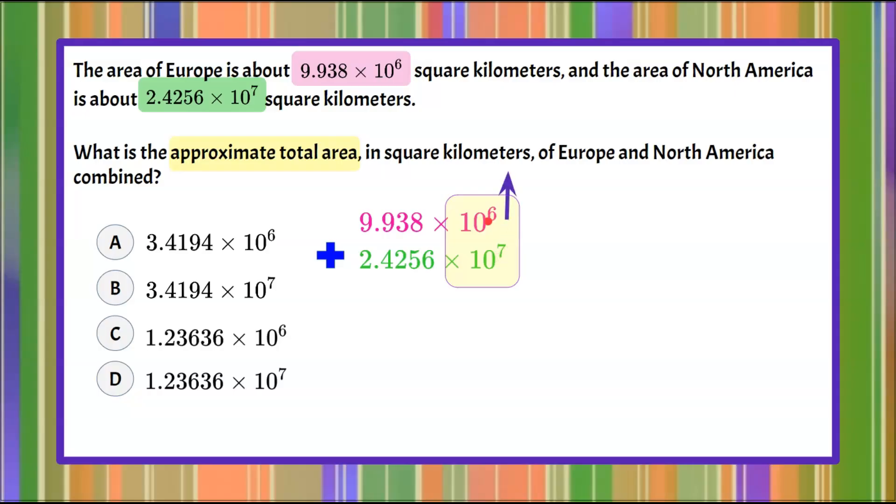I'm going to pick 10^6 and increase that exponent by 1. When I increase the 6 to a 7 so they are the same, when I increase the power of 10 by 1, I need to decrease the coefficient by dividing by 10 or moving the decimal one space. Every time you increase the exponent by 1, you decrease the coefficient by one decimal place.